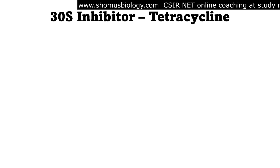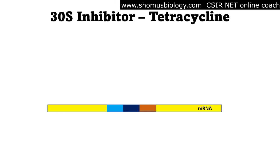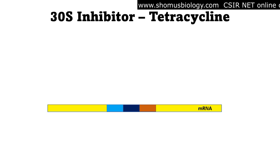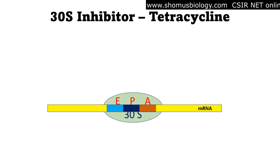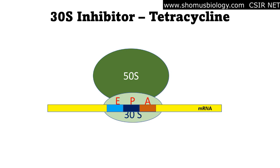Now let's look at an animated video regarding 30s inhibitors, using tetracycline as the example. Tetracycline antibiotics are known as 30s inhibitors — they inhibit the 30s ribosomal subunit of prokaryotic ribosomes, thereby preventing protein synthesis. In this animation, the mRNA contains codons shown in dark blue and orange.